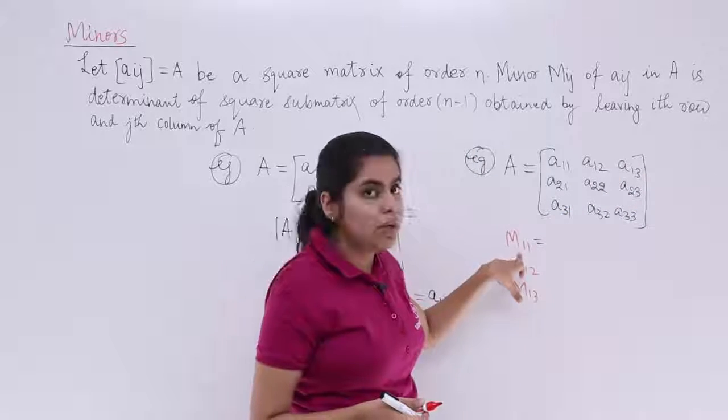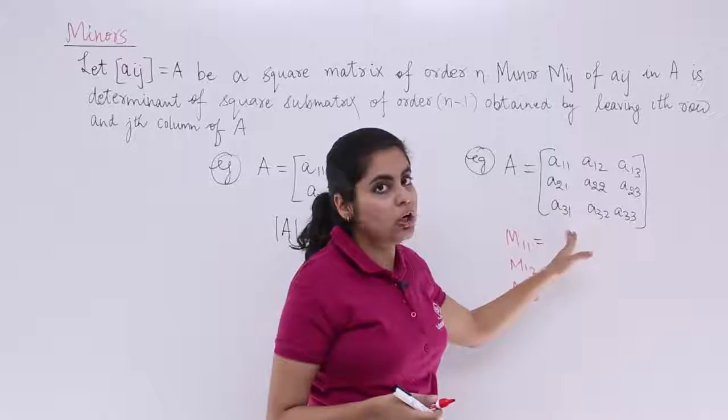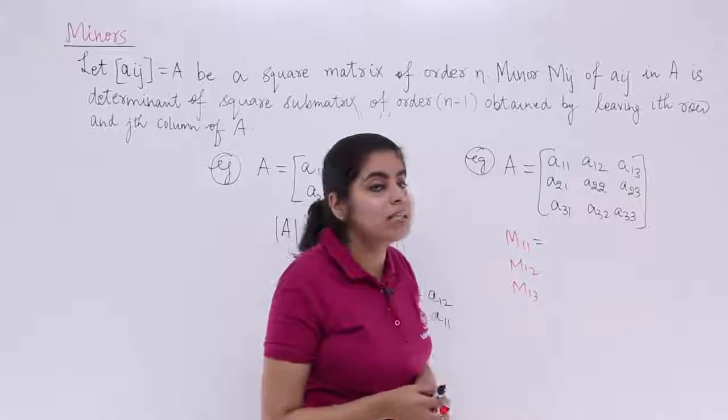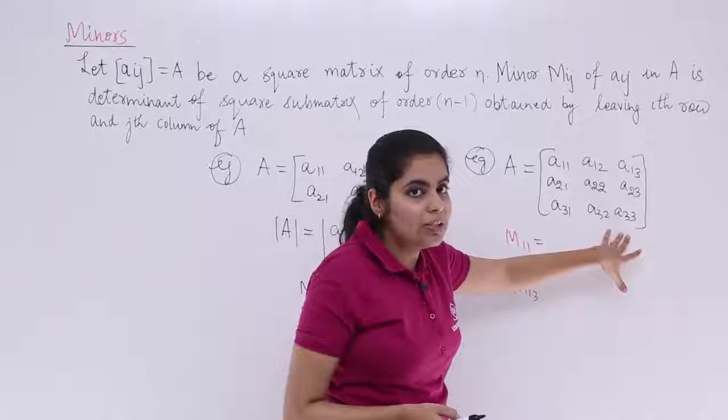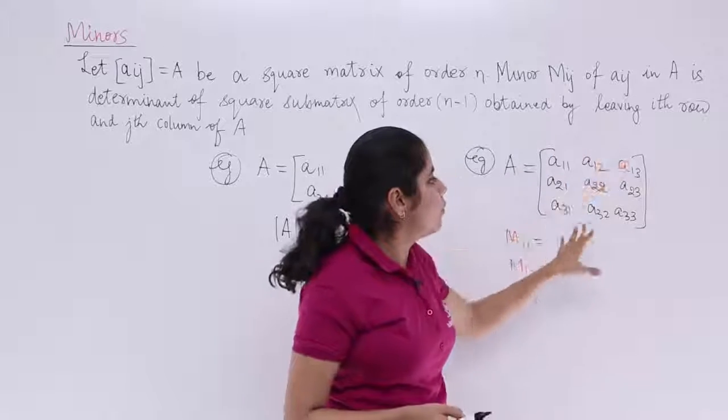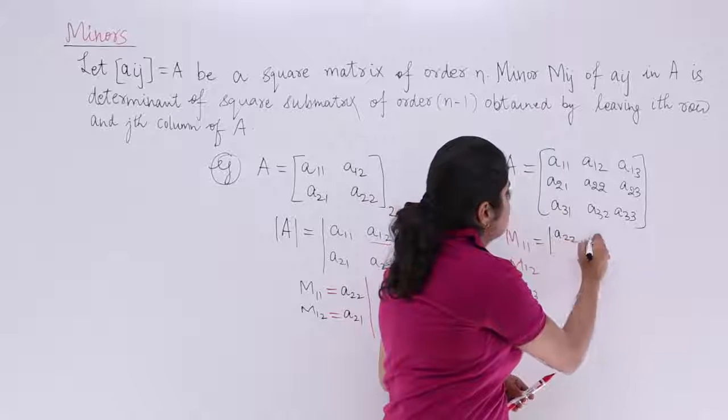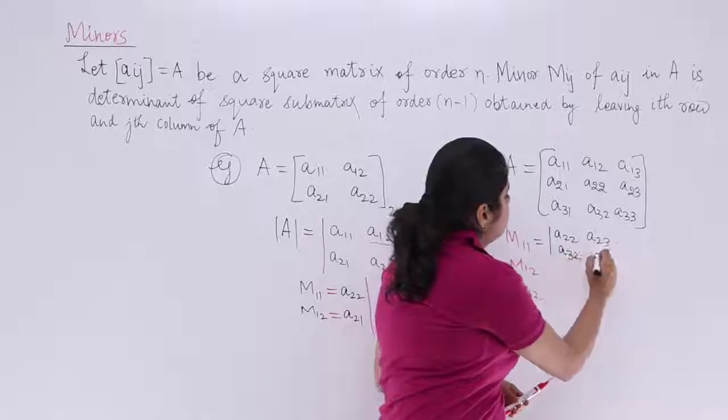So if it is M11, leave the first row, leave the first column. What is left? We are left with this portion. And that is why I said you that it should be order N minus 1. When it is ordered 3x3 in this case, you leave one row one column. You are left with a 2x2 determinant. So it is something like this that you obtain A22, A23 and A32, A33.